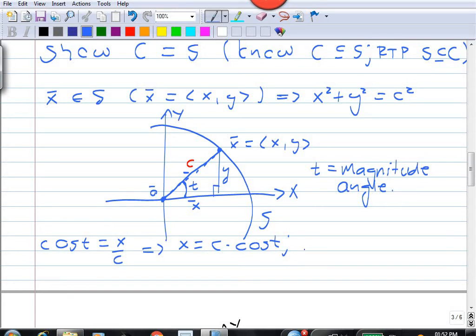which means x is c times cos t. And in exactly the same way, we have that y is c times sin t. And clearly,